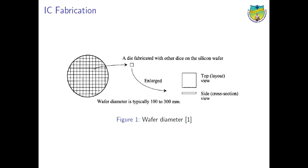Earlier BJTs were being used, but nowadays they use FETs because of several advantages over the BJTs. CMOS integrated circuits are usually fabricated on a thin circular slice of silicon called a wafer. Each wafer contains several hundreds of thousands of chips, also called the die.